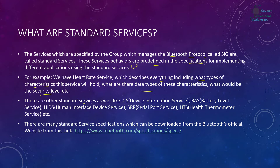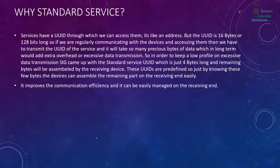There are other standard services as well: DIS which is the Device Information Service, BAS which is the Battery Level Service, HIDS which is the Human Interface Device Service, SRP which is the Serial Port Service, and HTS which is the Health Thermometer Service. Don't get confused between services and profile specifications — they are different. The profile specifies everything while the service specification specifies the properties of the service. There are many standard service specifications downloadable from the Bluetooth official website.